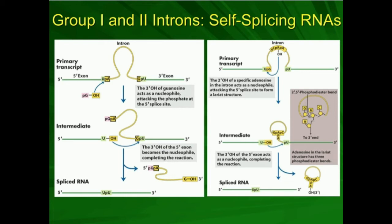What you'll notice about this group 1 type of splicing is that when we release the intron, it's actually just a linear chain. When we go to group 2 self-splicing introns, we're going to get a product that looks a little different, and it has a slightly different mechanism.